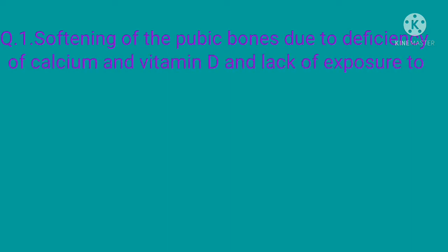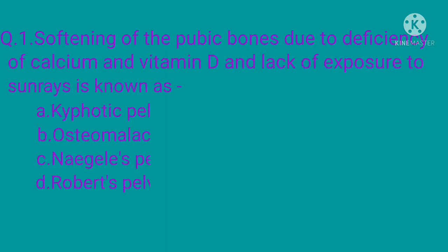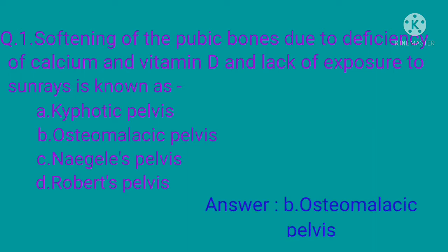Welcome back to RBMCQ Bank Knowledge Booster. Question 1: Softening of the pubic bones due to deficiency of calcium and vitamin D and lack of exposure to sun rays is known as — option A: kyphotic pelvis, option B: osteomalacic pelvis, option C: Naegele's pelvis, option D: Roberts pelvis. The correct option is option B: osteomalacic pelvis. This is the result of deficiency of calcium and vitamin D and lack of exposure to sunlight.